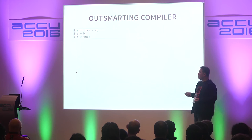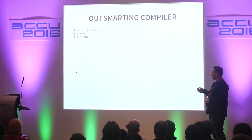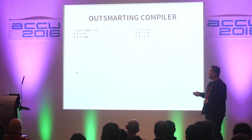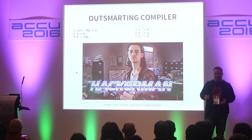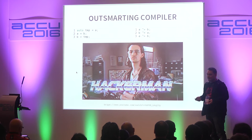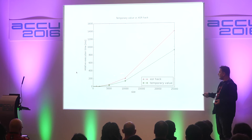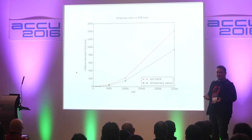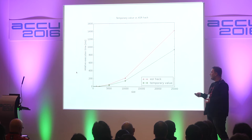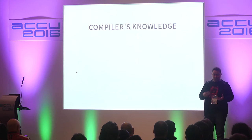The second thing about optimizing compilers is that people tend to underestimate what the compiler can do. Consider this classical example: if you want to swap two variables, you can do it either with a temporary variable or with the XOR hack. The XOR way is for hackers — they think that three XOR instructions will be faster than having a temporary value. But when you do measurements, you actually discover that the XOR hack is actually slower.